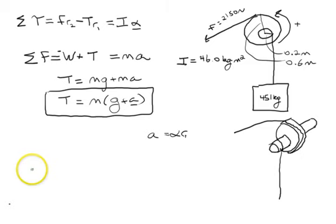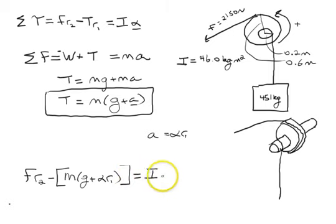We have the force times the radius outside minus the mass - this is the tension term right here - mass times gravity plus angular acceleration times the inner radius. I made the substitution for the acceleration and angular acceleration. And that's equal to the moment of inertia times the angular acceleration.